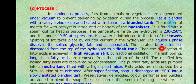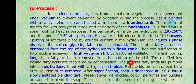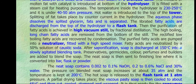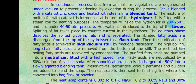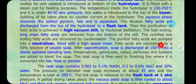The liberated fatty acids are discharged from the top of the hydrolyzer to the flash tank. Purification of the fatty acid is achieved by a high-vacuum still using fractional distillation. The high-boiling long-chain fatty acids are removed from the bottom of the still, and the rectified low-boiling fatty acids are recovered by condensation. The purified fatty acids are pumped into the neutralizer tank.